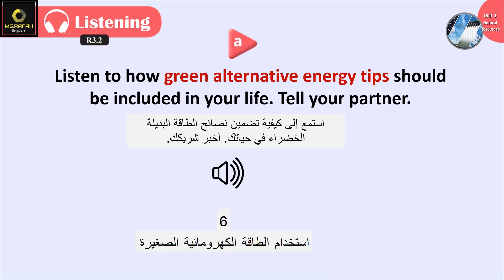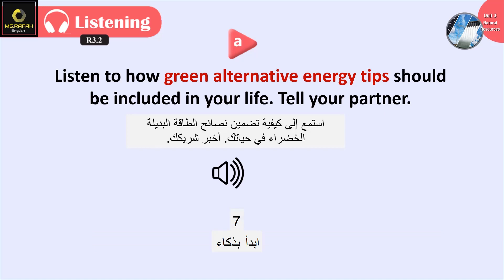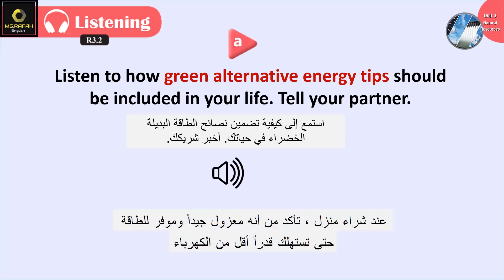6. Use small-scale hydropower. Micro-hydropower can be used, like pumping water, to power a generator. 7. Start smart. When buying a home, make sure it is well insulated and energy efficient, so you use less electricity.